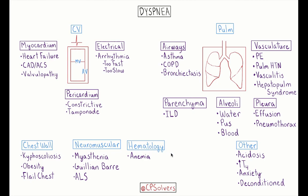The hematology subcategory includes anemia, where impaired O2 delivery leads to dyspnea. Importantly, these patients will often have a normal oxygen saturation, because oxygen saturation measures the proportion of red blood cells whose hemoglobin is bound to oxygen — not the total amount of red blood cells. Finally, in the other category, we have acidosis, where tachypnea occurs to reestablish pH; hyperthyroidism, which finds its way into many schemas; anxiety; and deconditioning. An important point about anxiety: it's often critical to determine whether the anxiety is preceding or following the dyspnea, as that can be very clinically important.